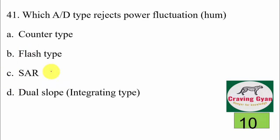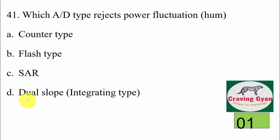41st question: which A-to-D converter rejects power fluctuation, also called HUM? The options are counter type, flash type, SAR, and dual slope. Power fluctuation is reduced by dual slope, that is the integrating type. Hence option D is correct.